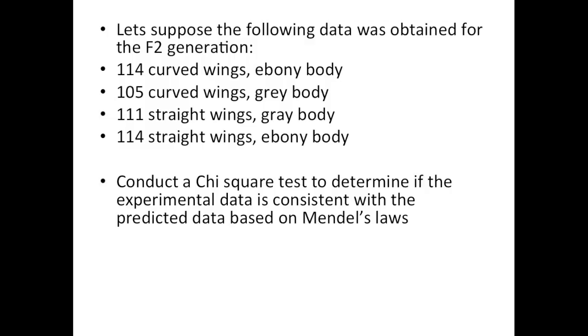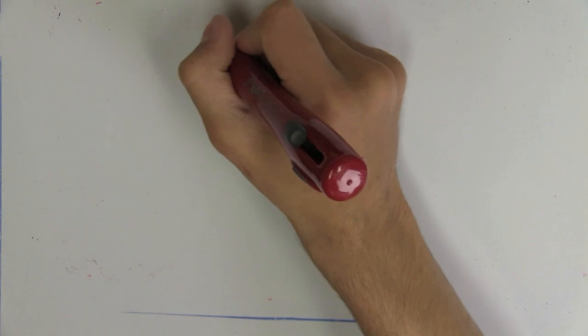But in order to do the chi-square, we need both expected, which we'll get in a second, and observed. So these are the observed outcomes for each of the phenotypes that was obtained experimentally in the F2 generation that we're then going to input into the chi-square. So we know now there was a total number of 444 offspring. So that's important.